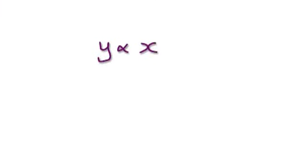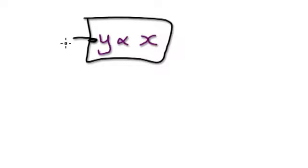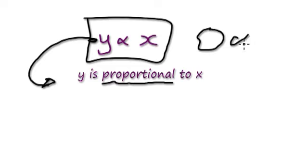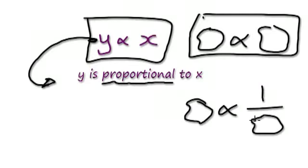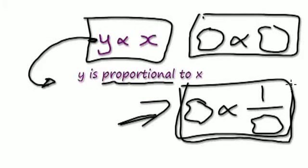Let me give you guys some more examples. Sometimes you're given a statement like this here and you're asked to express this in words. In this case, it would be: Y is proportional to X. Now if you have something of this form, it would be a proportional relationship. If you have something and then you have one over another thing, this here would be an inversely proportional relationship.